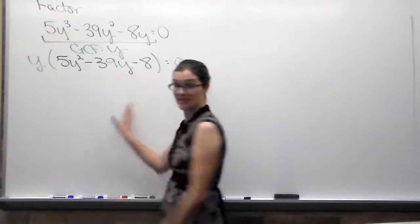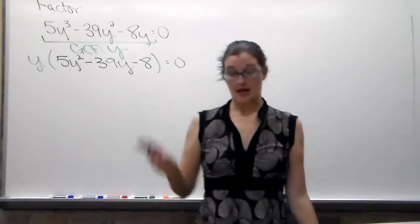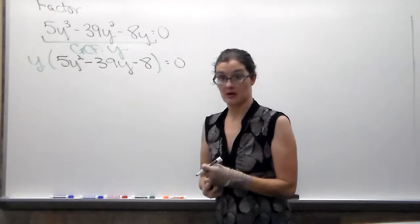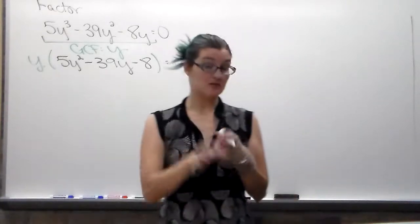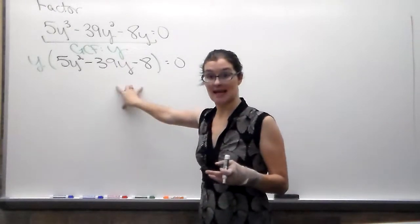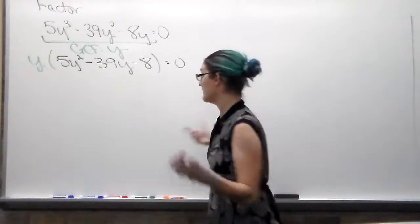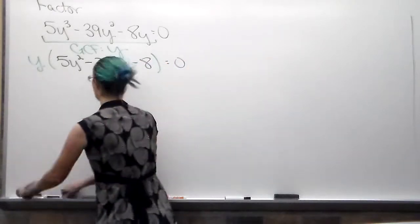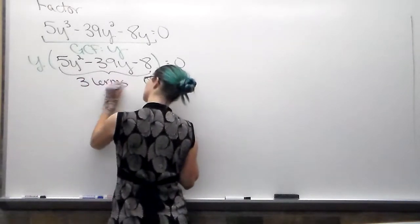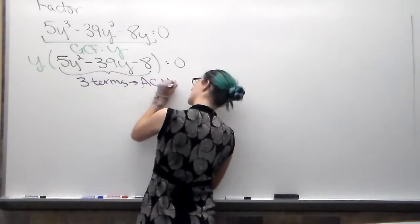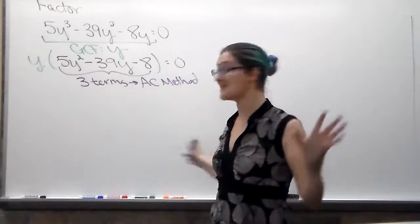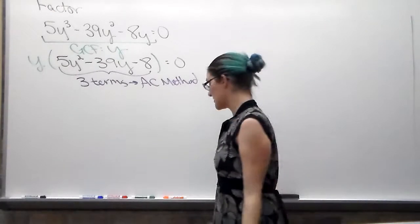Now I'm going to look at the inside. Every time you factor, once you've finished whatever step of factoring you're doing, you need to look at the inside. Can it factor more? I don't care if you're doing GCF, if you're doing AC method, if you're doing grouping. Every time you do any step of factoring, look at the inside. Can it factor more? Here, we have three terms. That is the AC method. Three terms, AC method, no matter what. Anytime you have three terms.